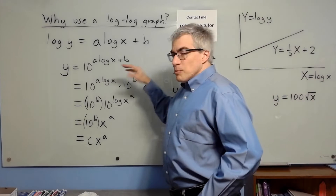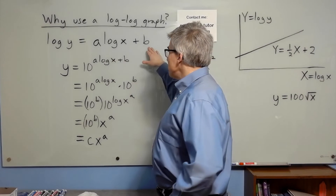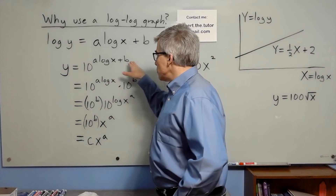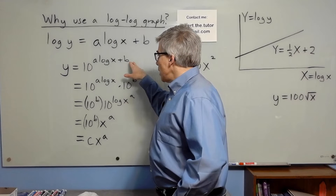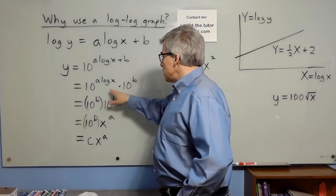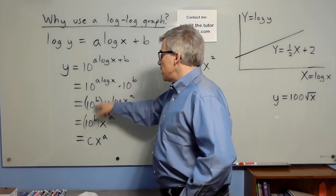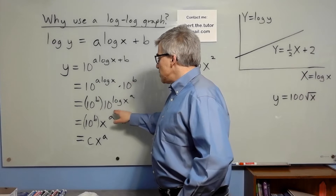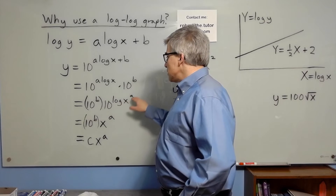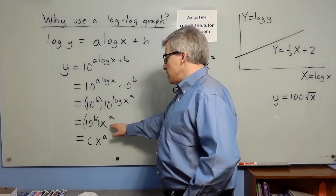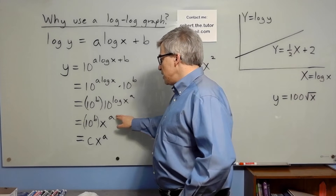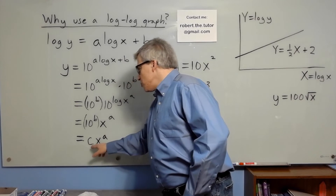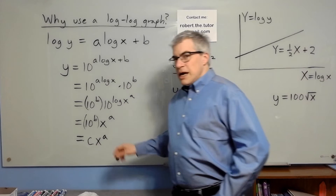The benefit to this is you can rewrite it and raise 10 to both sides. We break it up with 10 to the B out in front. 10 to the log of X to the A is just X to the A. 10 to the B we could rename C, and so Y equals C times X to the A.